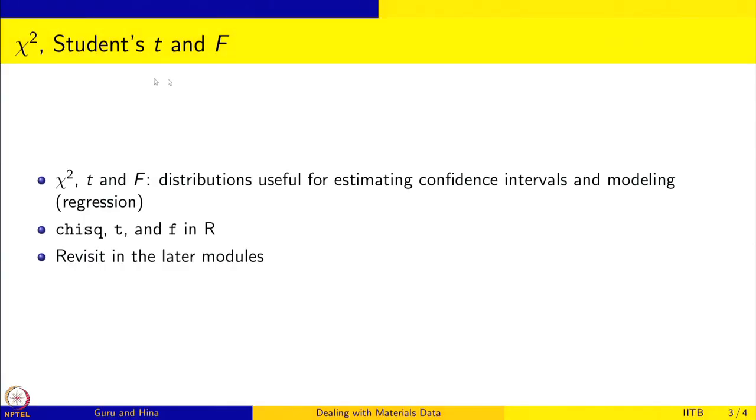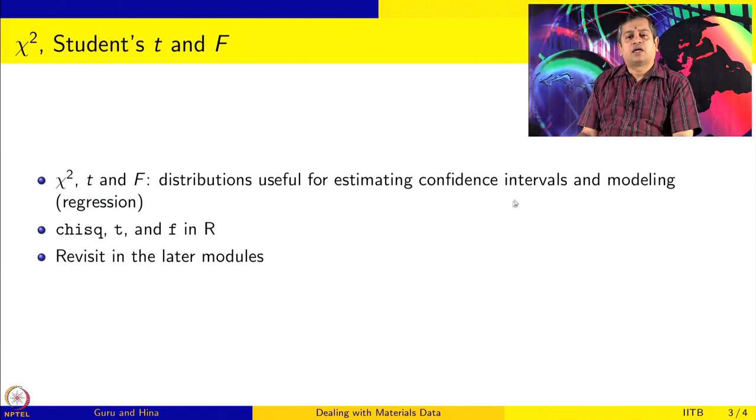One bunch of distributions which are very useful for us is the chi-squared, Student's t, and F distribution. They are very useful for estimating confidence intervals and for doing modeling, that is, for doing regression. Chi-squared, t, and F are the commands in R for dealing with these distributions.